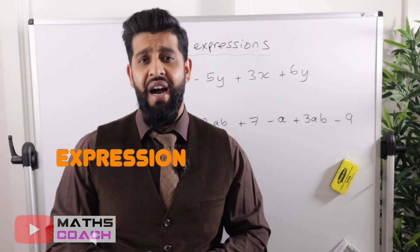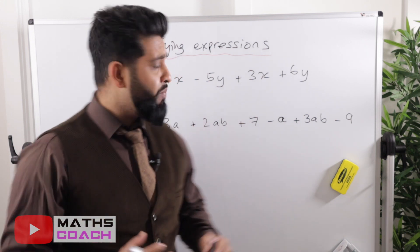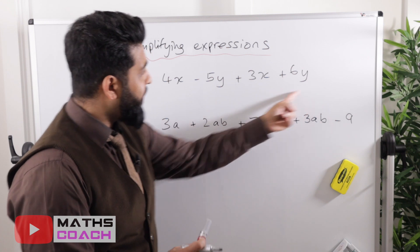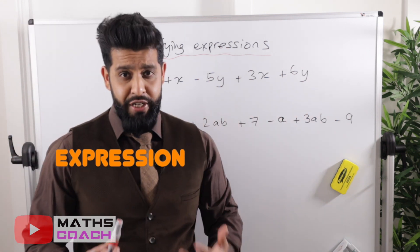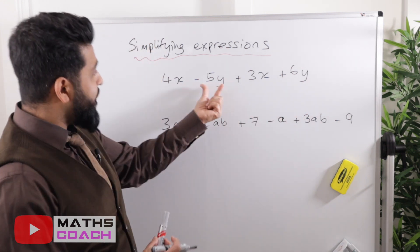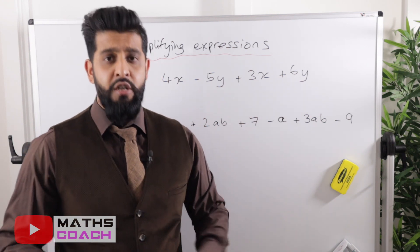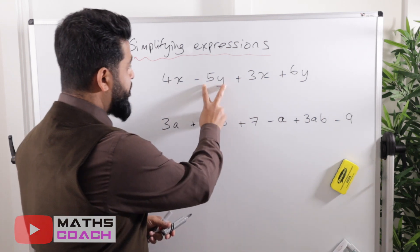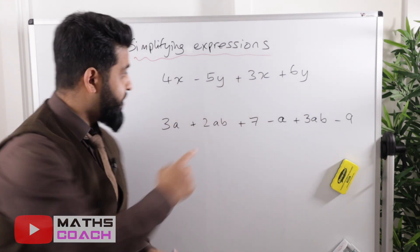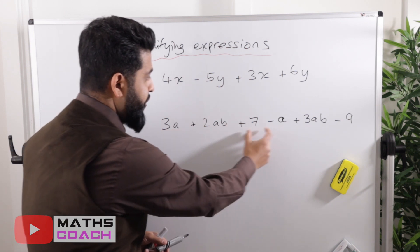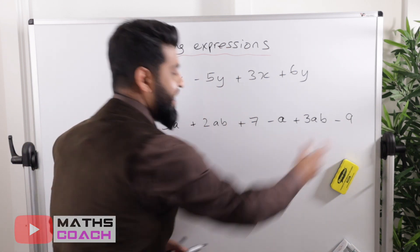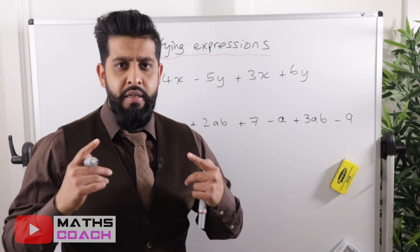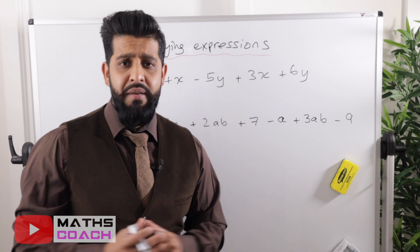Here on the board there are two examples. The entire thing is called an expression, and each individual part is called a term. Terms make up an expression. In this first example there are four terms, and in the second example there are six terms. Terms can be numbers as well.